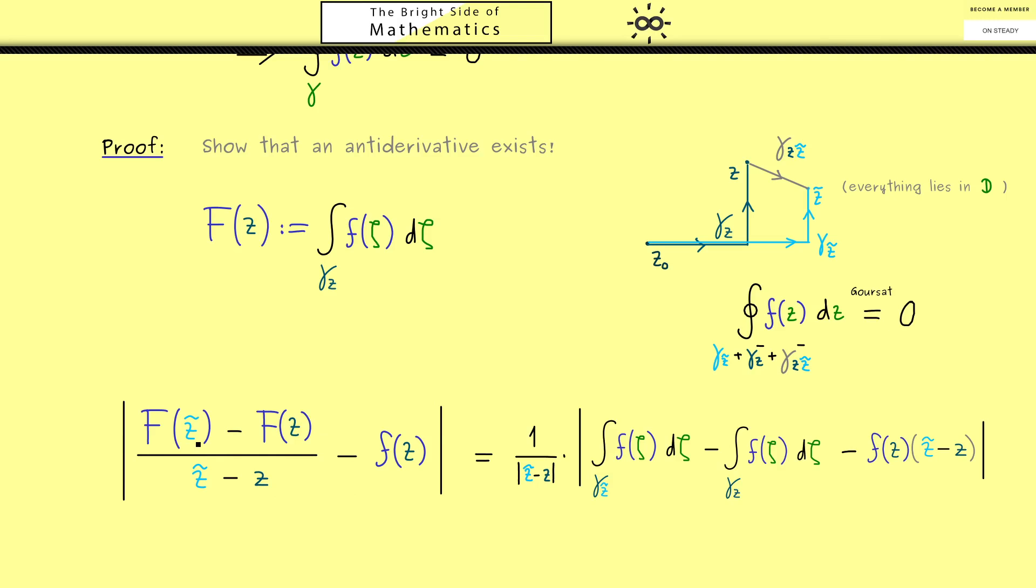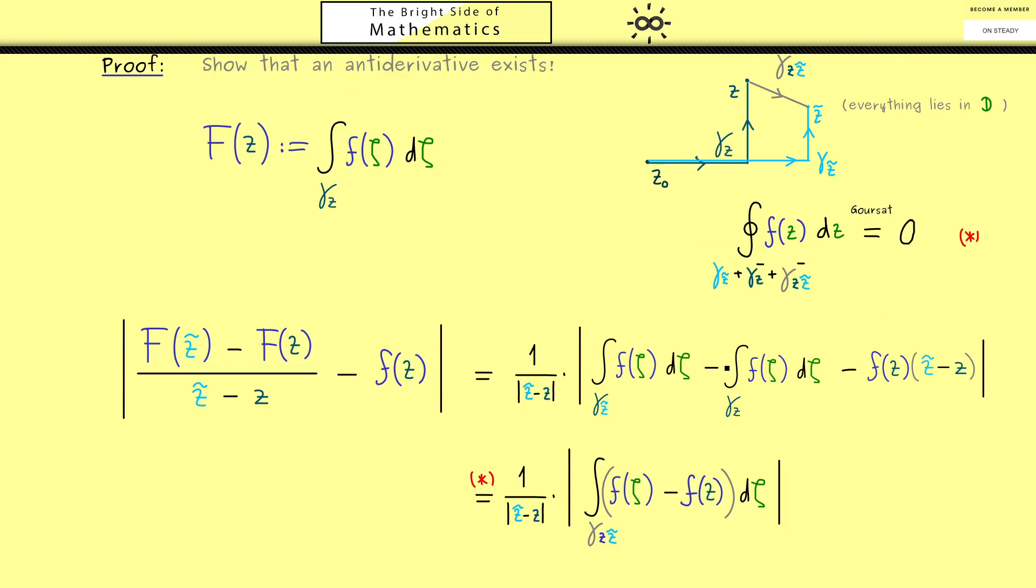However, there I don't have to show you the details, because we already have done this in part 21. So maybe, let's quickly go through the general idea here. So we consider the difference quotient here minus f of z. And with the absolute value we can do estimates, and in the end we want to show that the whole thing goes to 0 when z tilde goes to z. Then, we simply put in the definition for capital F of z tilde and f of z. And then we see, we have the difference here between two contour integrals.